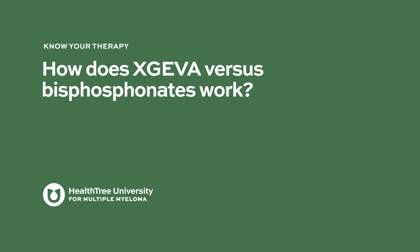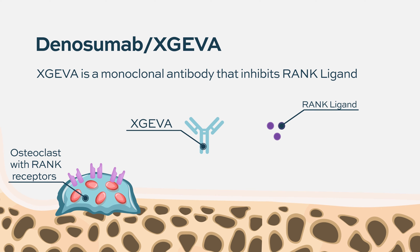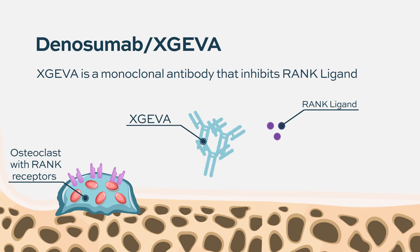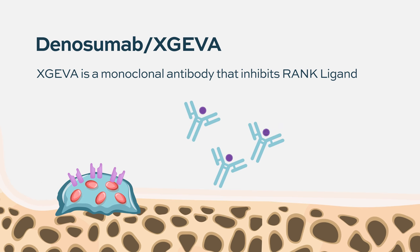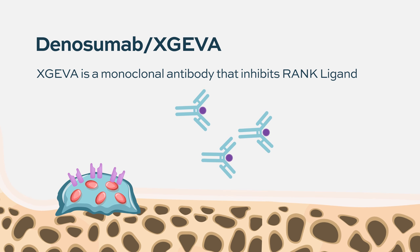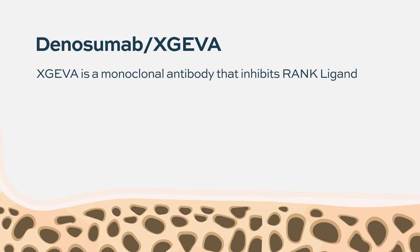How do Xgeva and bisphosphonates work differently? Bisphosphonates like zoledronic acid or pamidronate work differently than Denosumab. Denosumab is a newer generation agent — a monoclonal antibody, so it's a protein. It attaches to another protein called RANK ligand. RANK ligand is a very important protein for osteoclasts, and osteoclasts destroy the myeloma bone. So when you take away RANK ligand, the osteoclasts die and the bone is not destroyed.